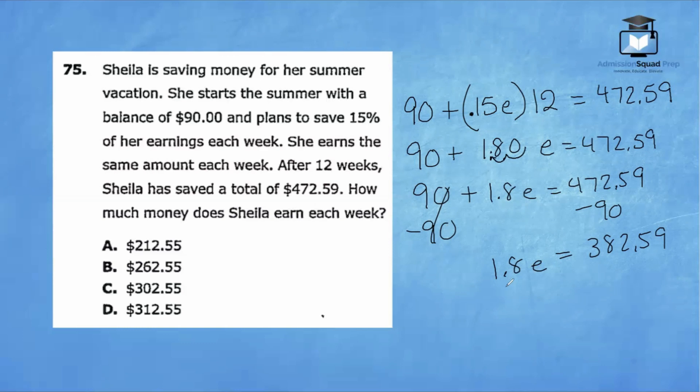Finally, we're going to divide both sides by 1.8. Remember, we don't like to divide by decimals in mathematics. So our goal is typically to turn the denominator into a whole number. So I'll move the decimal point one place to the right. Move this decimal point one place to the right. Now we have 3,825.9 divided by 18. Let's go ahead and divide.